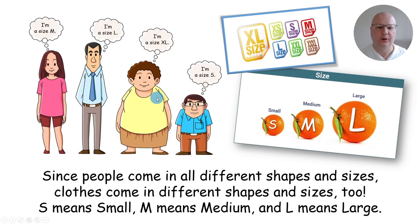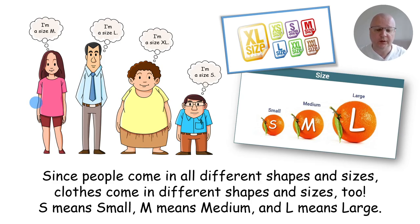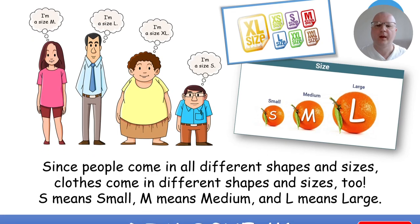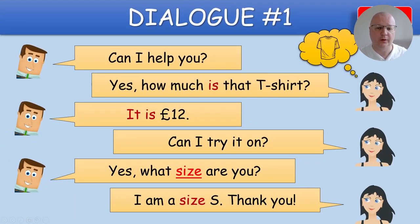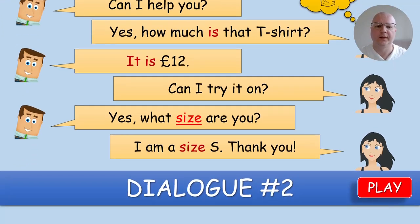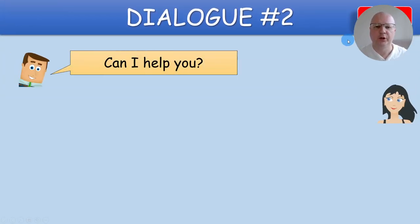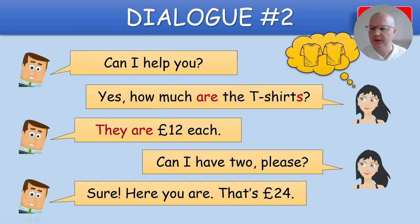I want to point out that the word 'size' is hyperlinked — if you click on it, it will take you to the slide which explains what 'size' means. Here you can say that since people come in all kinds of shapes and sizes, clothes come in different shapes and sizes too. Then you practice this dialogue together with the students — boys versus girls, group versus group, whatever works in your class. This is dialogue number two, which you can listen to by clicking the play button, or you can read it yourself.